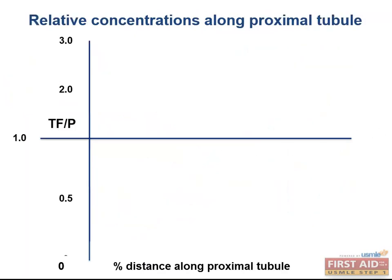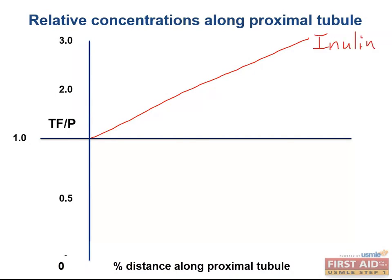Now let's move on to see how solute concentration changes along the proximal tubule. On this graph, the x-axis is the percent distance along the proximal tubule, and the y-axis is the ratio of tubular fluid concentration to plasma concentration. Inulin makes a straight line from 1.0 to 3.0 because it's freely filtered and neither secreted nor reabsorbed — its concentration increases because water is being reabsorbed. The area below inulin represents net reabsorption, and the area above represents net secretion.